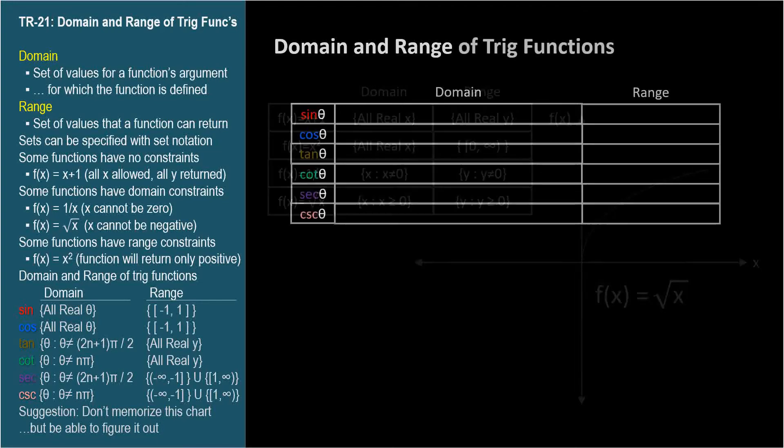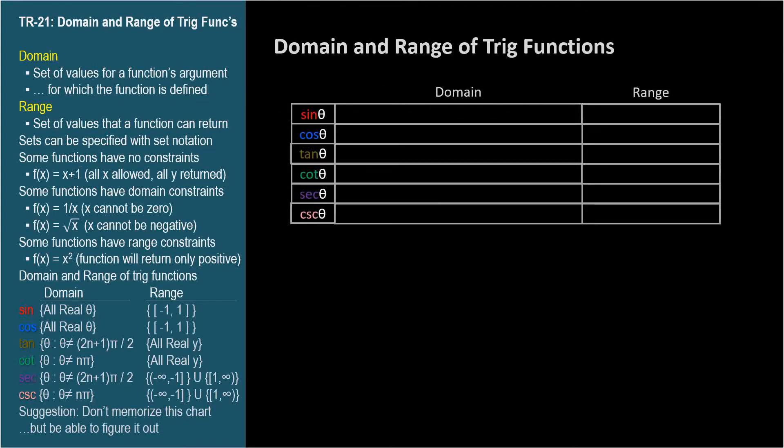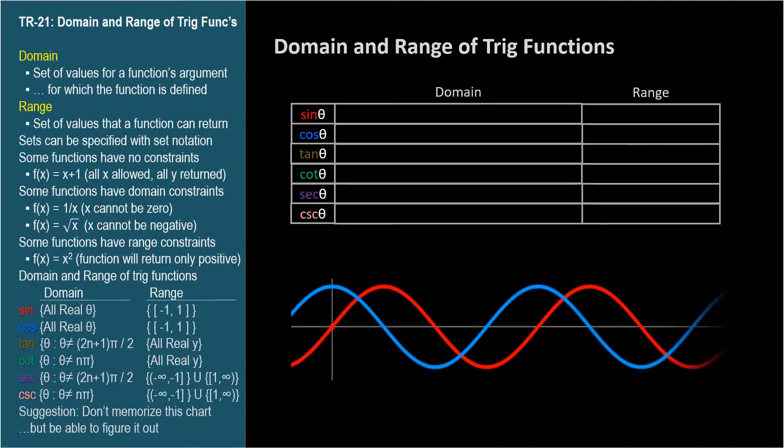Now let's turn our attention to the domain and range of the trig functions. We mentioned all of these cases when we graphed the functions in the last three videos, but we'll formalize our findings here. For sine and cosine, the domain has no constraint.